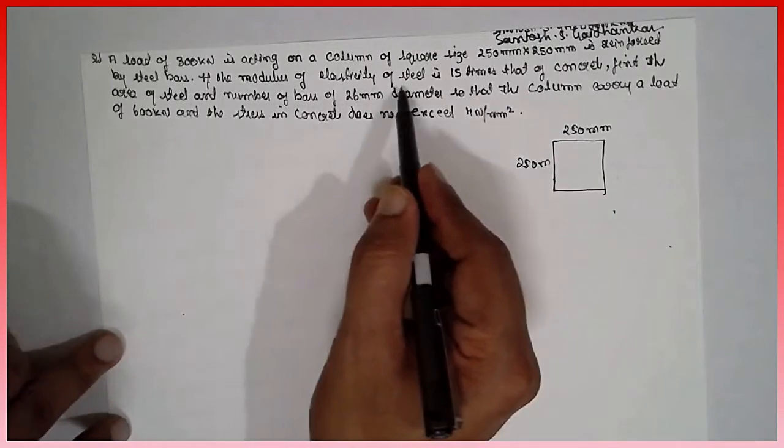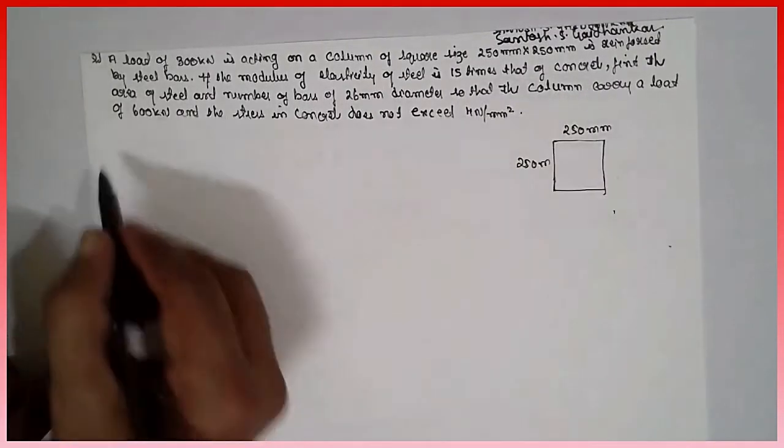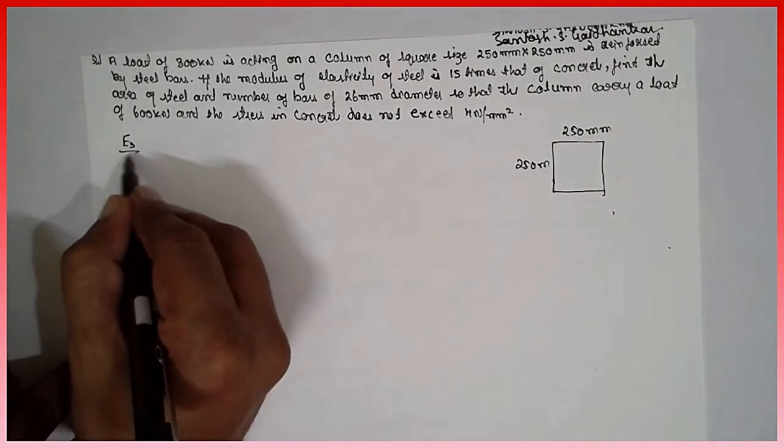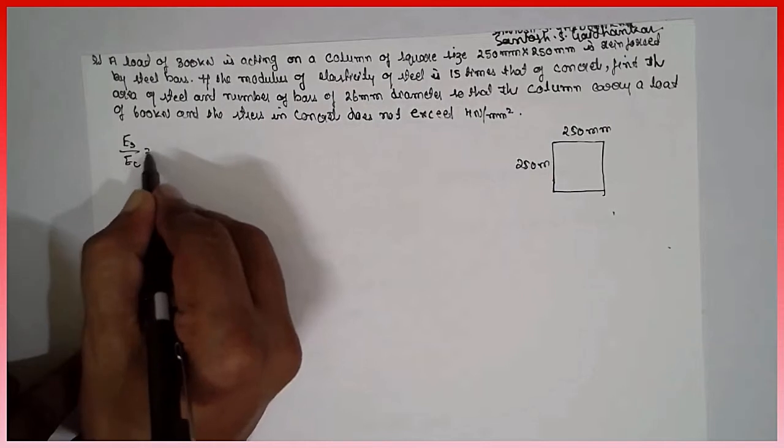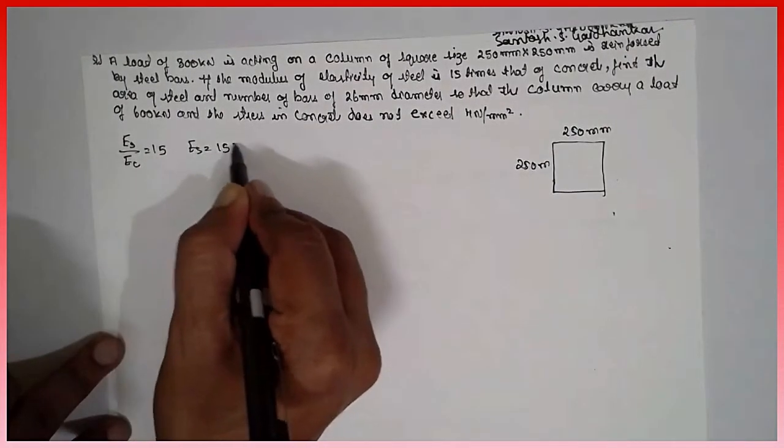If the modulus of elasticity of the steel is 15 times the concrete, that means they are given modulus of the steel is 15 times the concrete. That means Es is 15 times Ec.